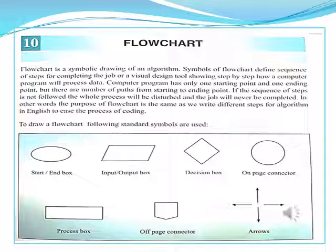In easy language, the flowchart works the same way — if we don't follow steps, our job is not complete. In flowchart, we have a diagram. If we don't have a flowchart, then we can't do our computer coding. The flowchart is incomplete without its symbols, which we will show you below.